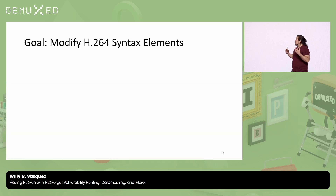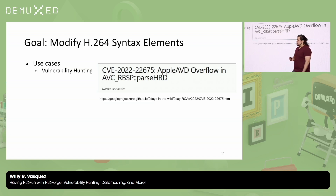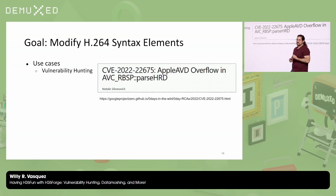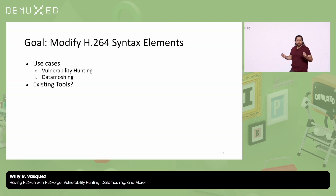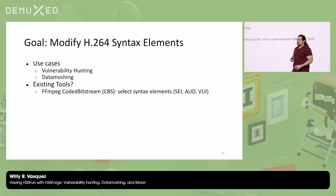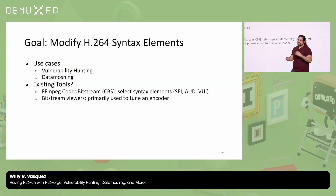Going back to H26Forge, what we want to do is modify H264 syntax elements. Two particular use cases: the first is vulnerability hunting. CVE-2022-22675 is an in-the-wild exploited zero-day — attackers already have something like H26Forge and are finding vulnerabilities, so we want to be able to do that as well. And also data moshing, which is a fun glitch video effect. Are there existing tools to modify syntax elements? Not so much. FFmpeg's coded bitstream lets you modify select syntax elements but is mostly related to playback information, and while there are many bitstream viewers, these just tell you what the syntax elements are without letting you modify them.